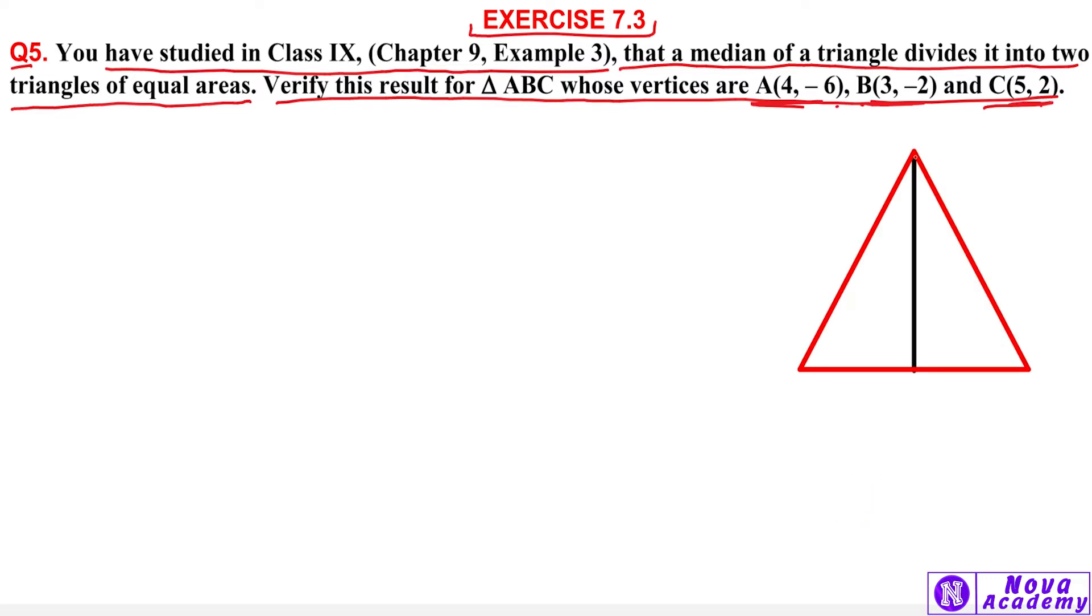So first of all, we will make a triangle and we will make a median. The median point we will make D. This point A, this point B, this point C. Point A is at coordinates (4, -6), B point is at (3, -2), and C point is at (5, 2). We have to find D point.